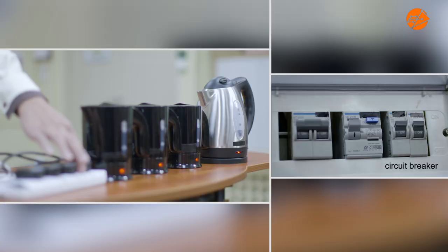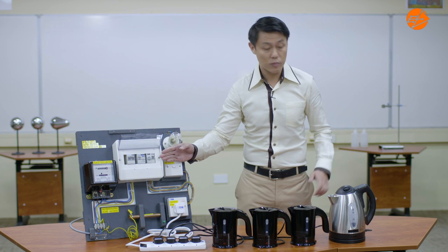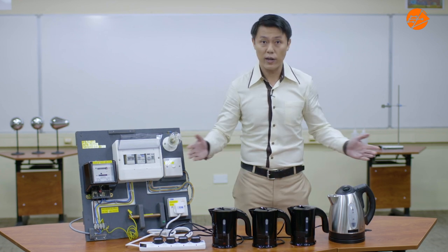Let's add an electric heater of a higher power rating to the electric circuit. Seconds after turning it on, the circuit breaker trips. Why does the circuit breaker trip only when this heater is connected? Let's find out.